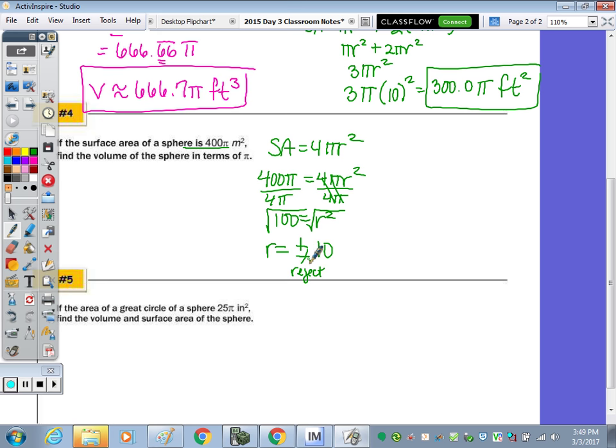Now we can plug that radius of 10 in to find the volume. Volume is equivalent to 4/3πr³, so 10³. We mentioned 10³ is 1000, and then 4/3 of 1000 is going to be 1,333 and 1/3π meters cubed.